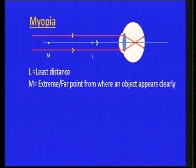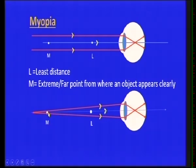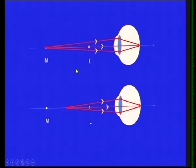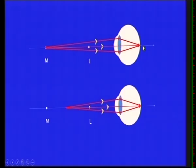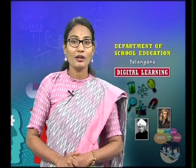When you place the object between the far point M and the least distance L, you can see objects clearly. When the object is placed exactly at the far point M, the eye lens forms the image on the retina and the person can see clearly. When the object is between the far point and least distance, the eye lens can also form a clear image on the retina. These ray diagrams are very important for examinations — everyone must practice them.